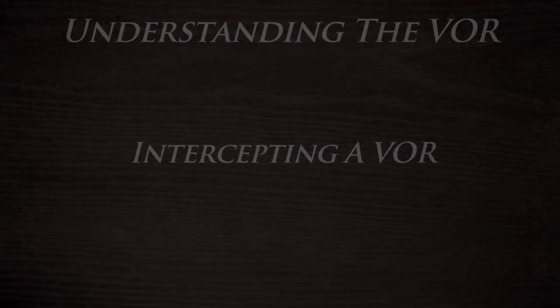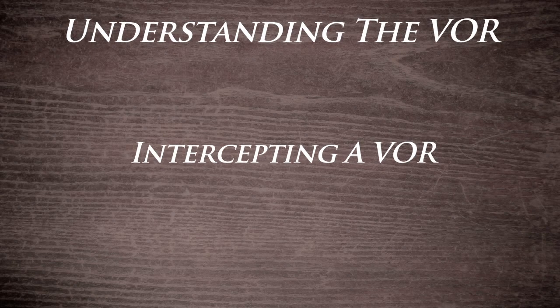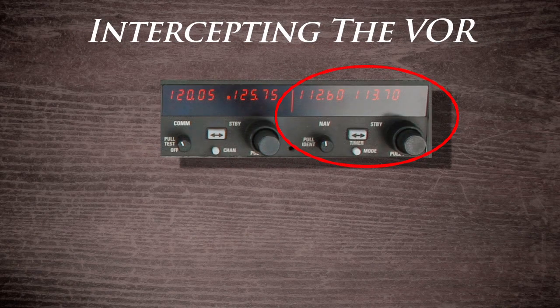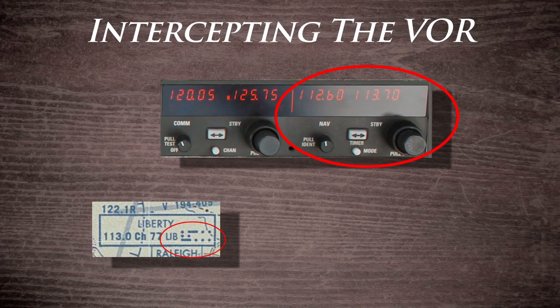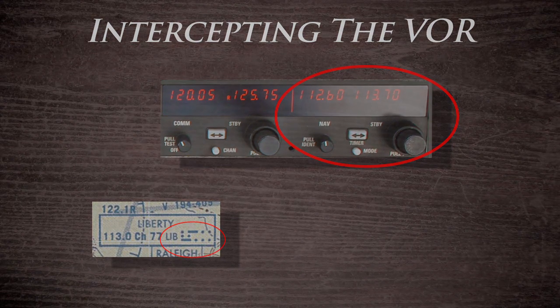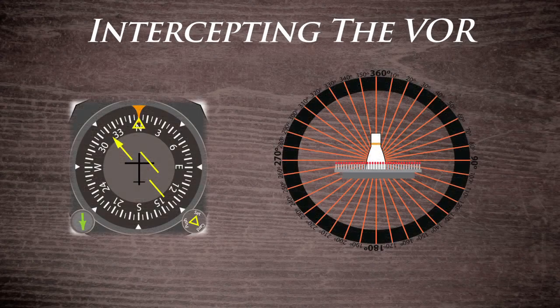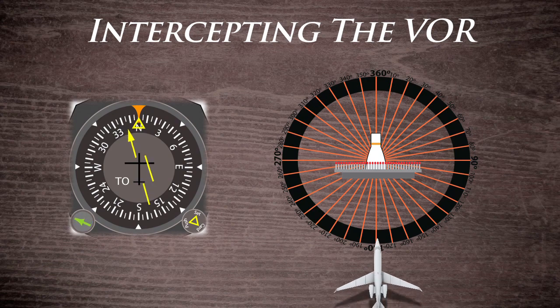Now for the fun stuff — let's explain the process of intercepting a VOR. First, we need to tune to the desired station and identify its Morse code. If you hear the code and it correlates to what you see on the sectional, you are all set. Next, tune the OBS until the TO indication appears and continue tuning the OBS to center the needle to the station.